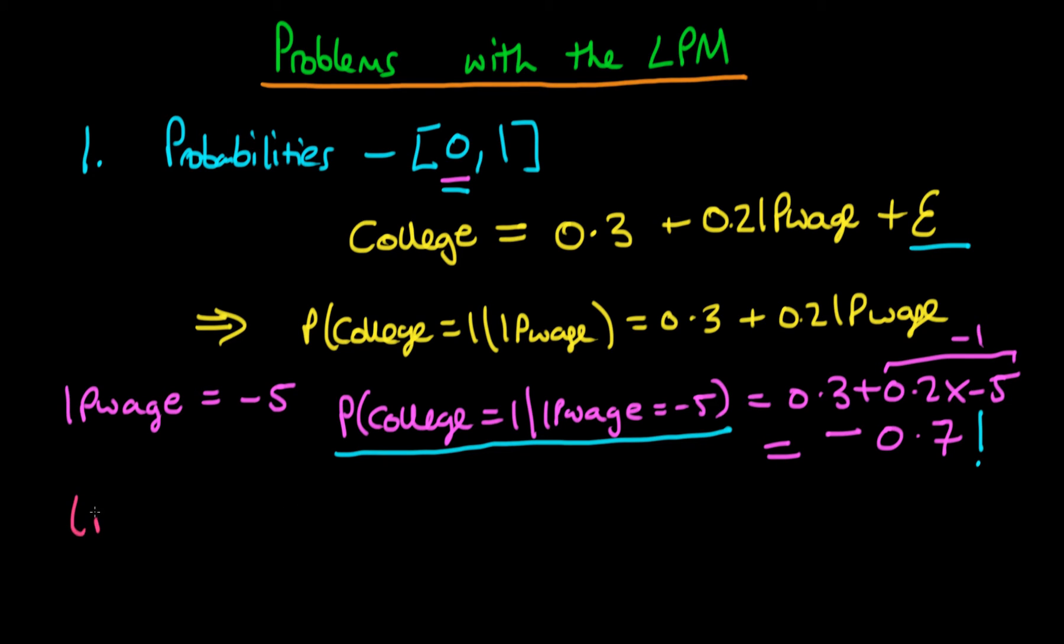Similarly it's not difficult to imagine that we can get values above the one upper bound. So suppose that the log of parental wage was found to be 10. From the model which we've estimated we would then go on to suppose that the probability that an individual goes to college, so that's the probability that college equals 1, given that we have the log of their parental wage equal to 10...